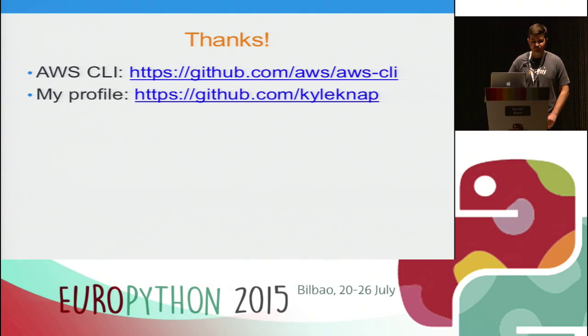Q&A: An audience member asks why the AWS CLI uses 'help' instead of '--help' and man pages, noting that Unix conventions typically use '--help'. The speaker explains it was an implementation design decision — Windows doesn't have man pages, so using 'help' is intuitive for that platform.